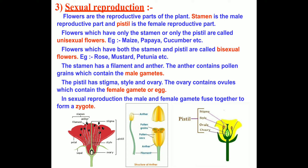I will show you the china rose flower. The stamen has a filament and anther. The anther contains pollen grains which contain the male gamete. So the stamen is the male reproductive part of the flower, made up of the anther which contains pollen grains and has the male gamete.